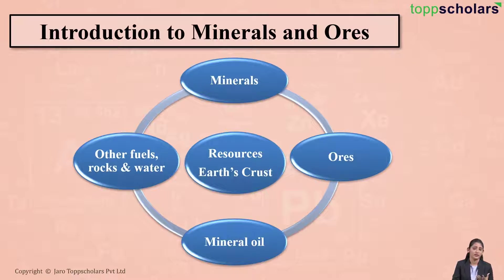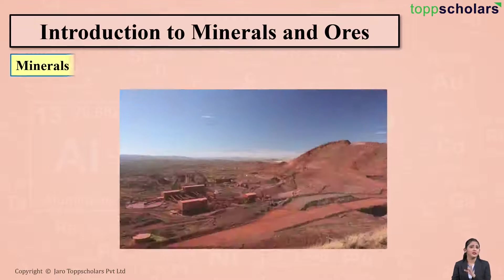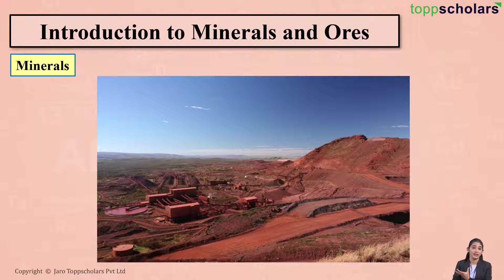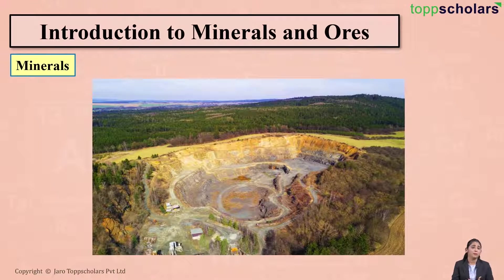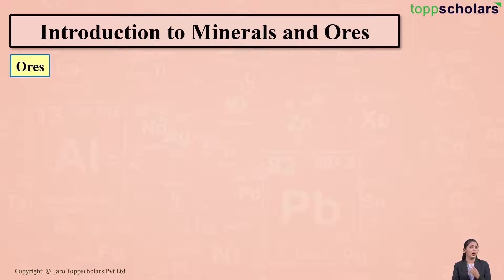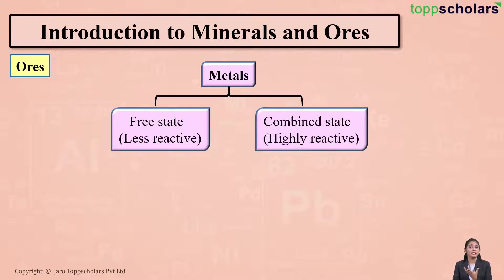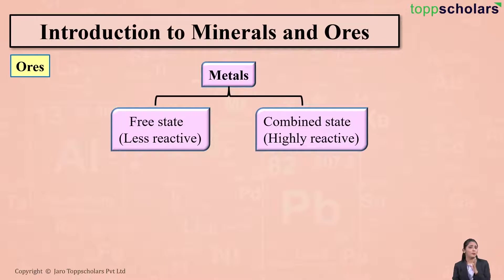Minerals are generally found in the form of rocks present on the earth, and so these minerals can be easily obtained by mining. Now, metals exist in nature in the free state as well as in the combined state. Metals which are less reactive generally occur in the free state, whereas metals which are highly reactive occur in the combined state.